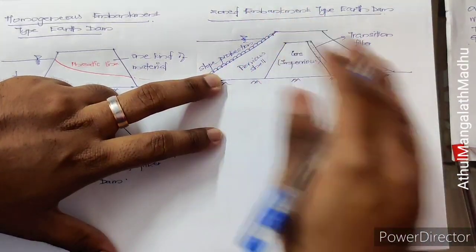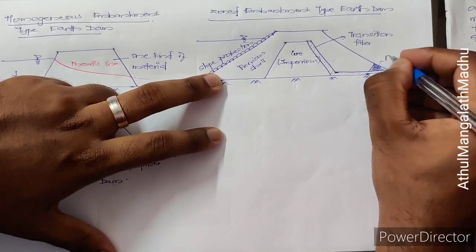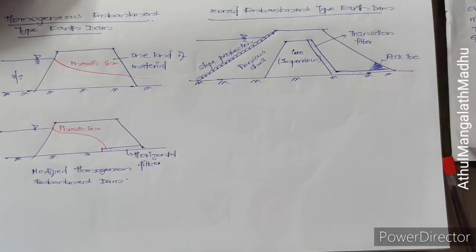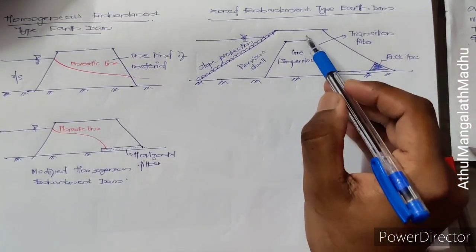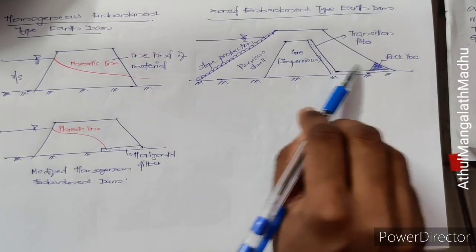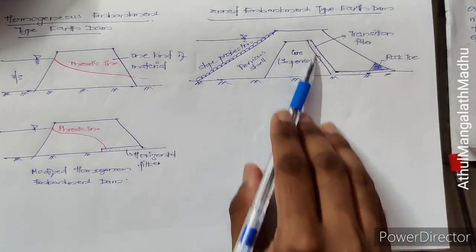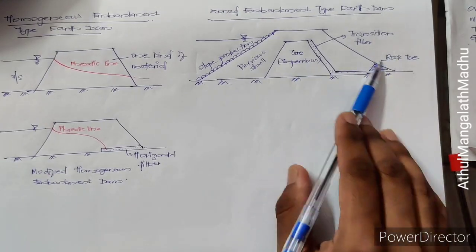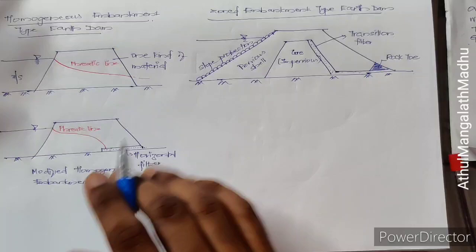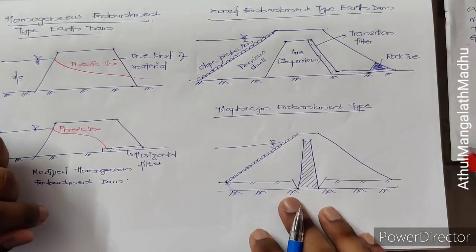On the downstream side, a rock toe is provided. The purpose of the transitional filter is to act as a drain. The rock toe contains large rocky material with more void spaces so water quickly exits. That is the drainage arrangement on the downstream side with the rock toe and transitional filter — that is how a zoned embankment type earth dam looks.